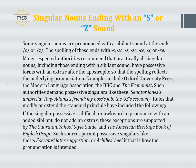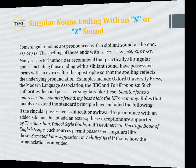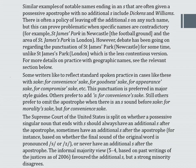Rules that modify the standard principle include: if the singular possessive is difficult or awkward to pronounce with an added sibilant, do not add an extra S. These exceptions are supported by The Guardian, the Yahoo! Style Guide, and the American Heritage Book of English Usage. Such sources permit possessive singulars like 'Socrates' letter suggestion' or 'Achilles' heel' if that is how the pronunciation is intended. Similar examples of notable names often given a possessive apostrophe with no additional S include Dickens and Williams.